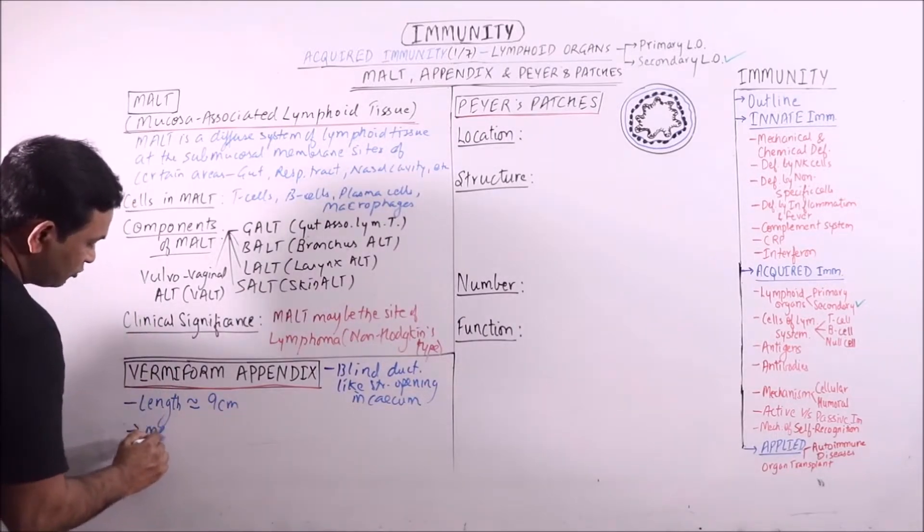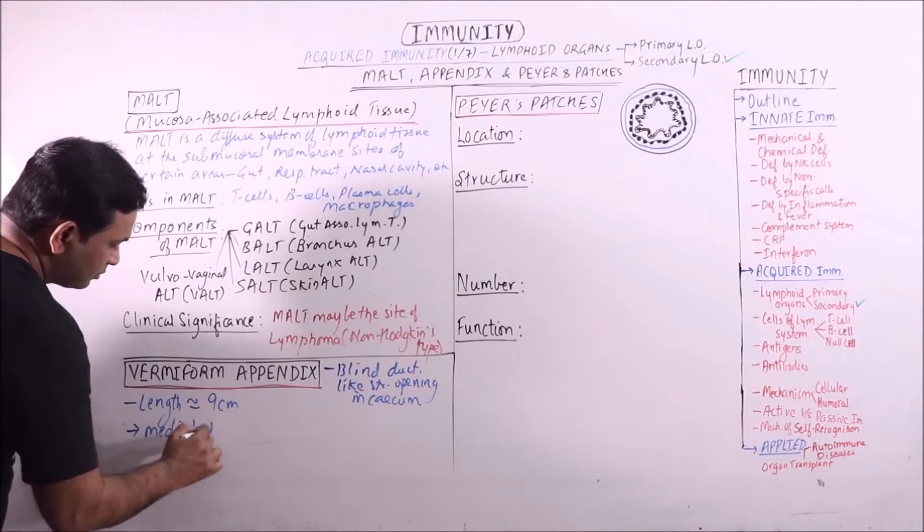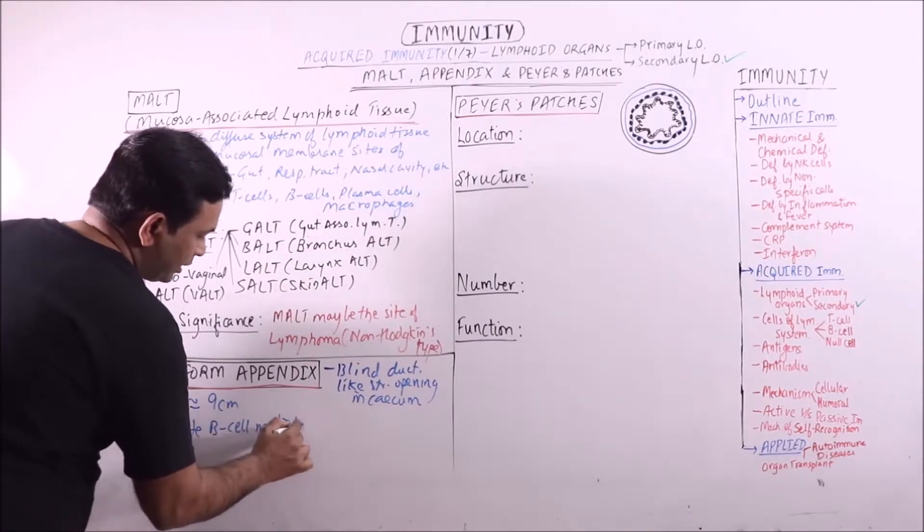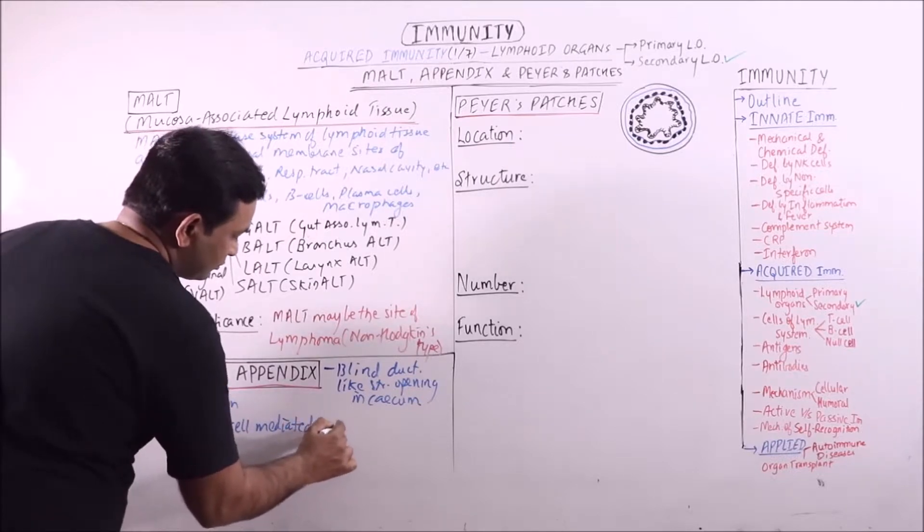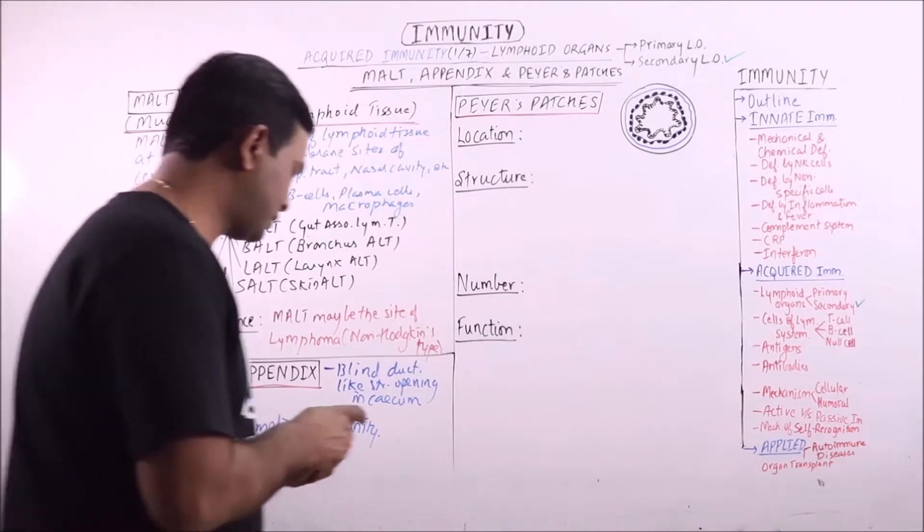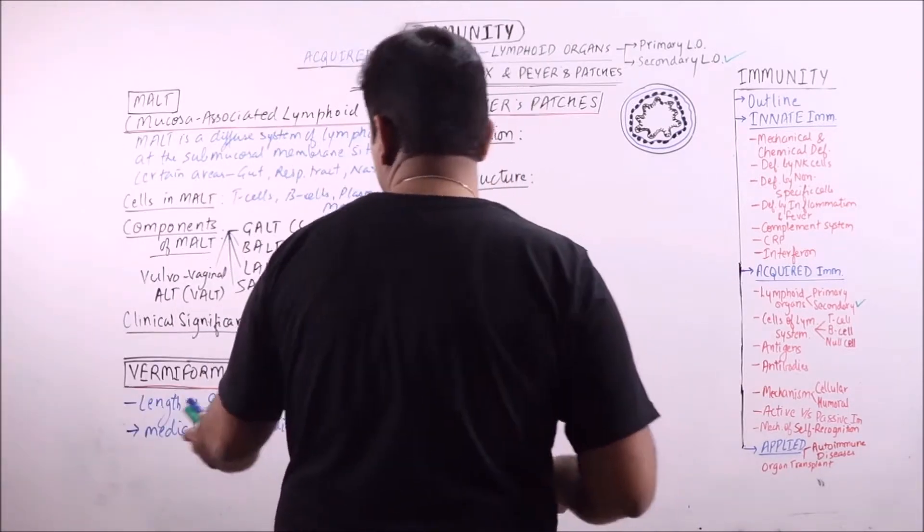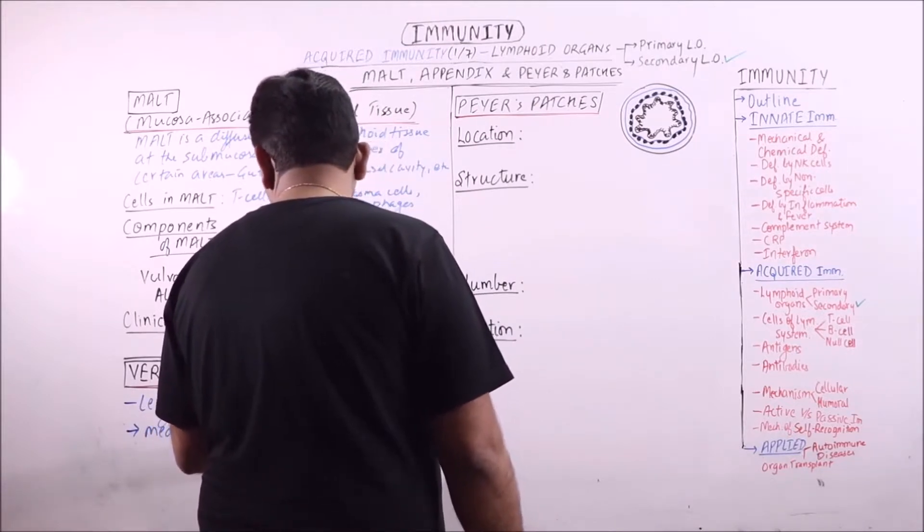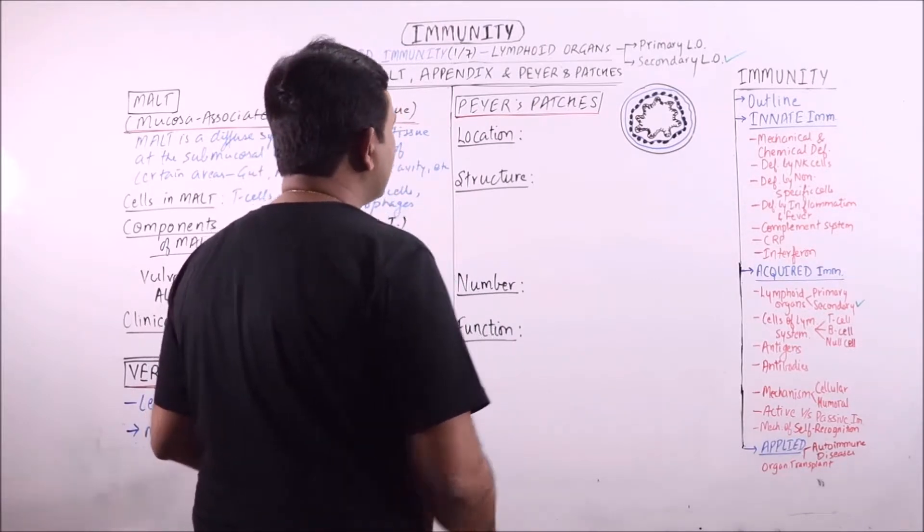Main function is to mediate B cell-mediated immunity. So this is vermiform appendix. From a digestive point of view it is vestigial, but from an immunological point of view it is functional.